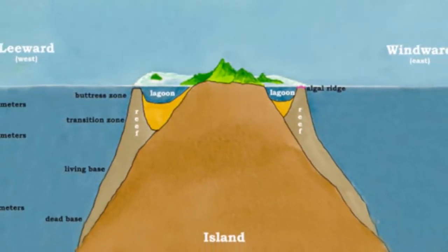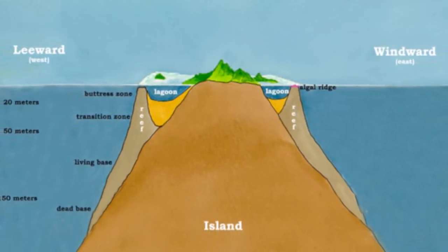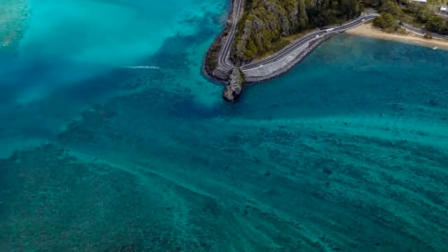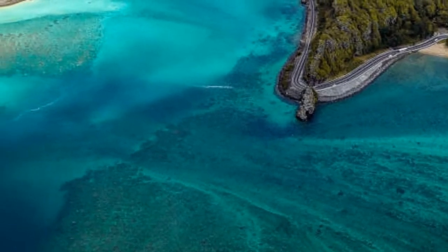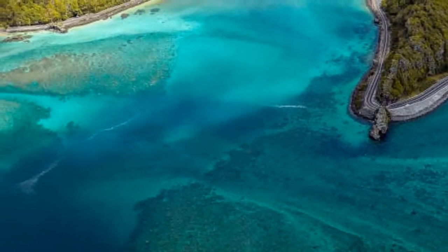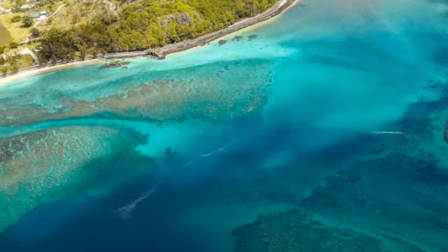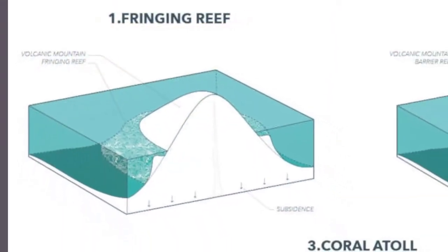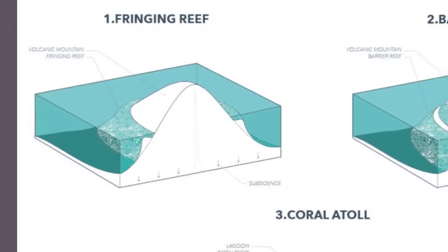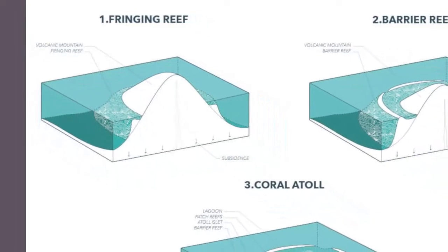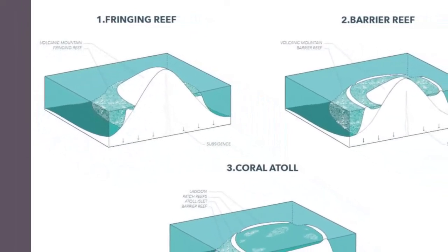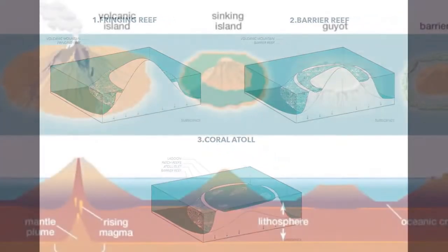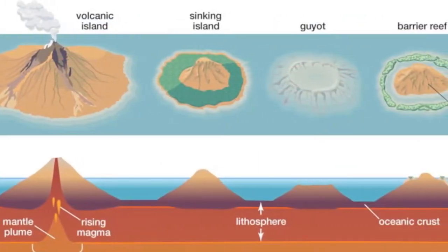The naturalist Charles Darwin was one of the first to formulate a hypothesis on the origin of atolls. From 1831 to 1836, he sailed aboard the British ship HMS Beagle during its famous circumnavigation of the globe. In various places that Darwin visited, he noticed a progression of stages in coral reef development: 1. A fringing reef along the margins of a volcano. 2. A barrier reef with a volcano in the middle. 3. An atoll, which consists of a continuous or broken ring of coral reef surrounded by a central lagoon.